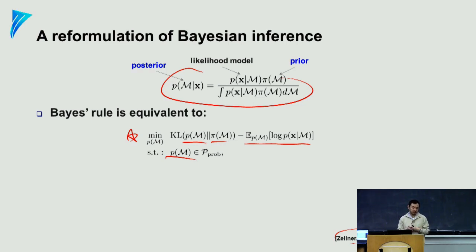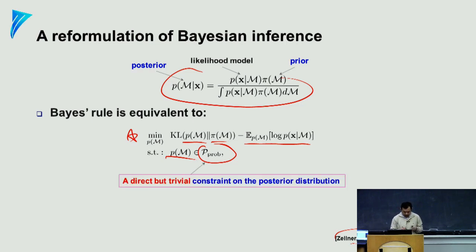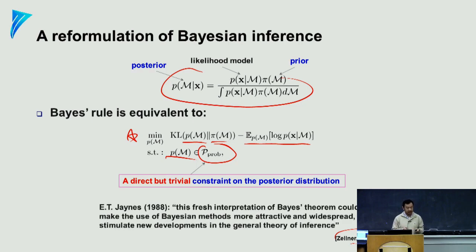This is a variational expression of Bayes' rule. In a variational expression, you turn the problem into an optimization problem, which gives you more insight about what the effect is — for example, making the posterior model closer to the prior while trading off with the likelihood fitness. It also gives you new space to design inference algorithms or to augment the model. This is a very interesting rule that I want you to remember, because we are going to take advantage of this formulation to steer Bayesian inference in some very interesting and principled directions.